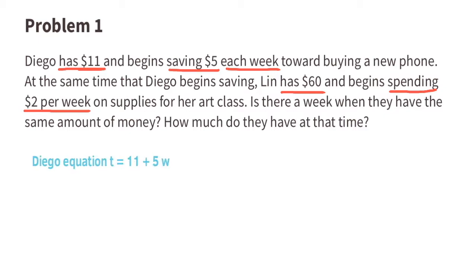His equation would be t equals 11 plus 5w. I think of this as: total equals the $11 that he started with plus $5 each week. Next we can write Lynn's equation. Lynn's equation would be t equals 60 plus negative 2w. I like to think of this as: total equals the $60 that she started with plus the $2 that she spends each week.